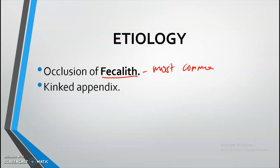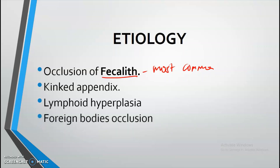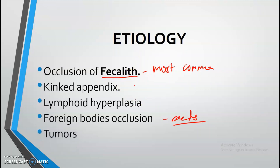Another cause is the presence of lymphoid hyperplasia. Another one is foreign body occlusion, which can include seeds — small foreign objects that can get lodged in the appendix. Again, the most common cause is the fecalith or hard fecal matter. It can also be due to the presence of a tumor in the appendix.